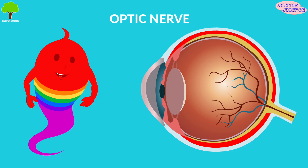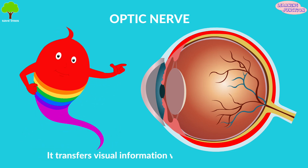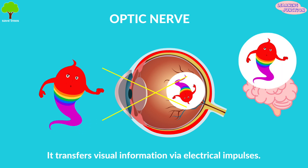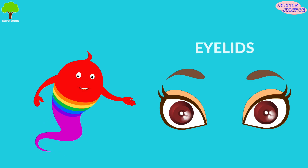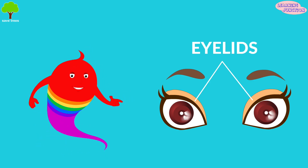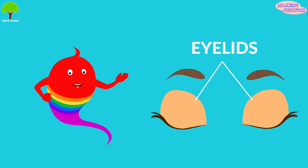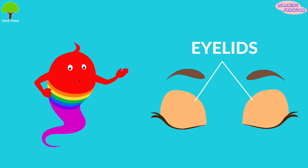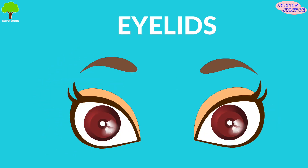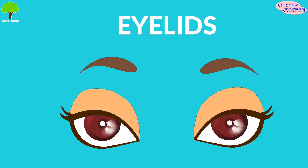Optic nerve. The electrical message from the retina travels along the optic nerve to our brain. Eye lids. These protect our eyes. The eyelids can shut out light so that we can sleep. Eyelids blink so they can keep a moist film over the cornea.